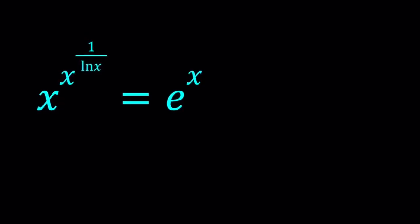Hello everyone. In this video we're going to be solving a very exponential and logarithmic equation: x to the power x to the power 1 over ln x equals e to the power x. You have ln x, e to the x, x to the power x to the power something, and so forth. I'll be presenting two methods and I'll show you a graph at the end. Let's start with the first method.